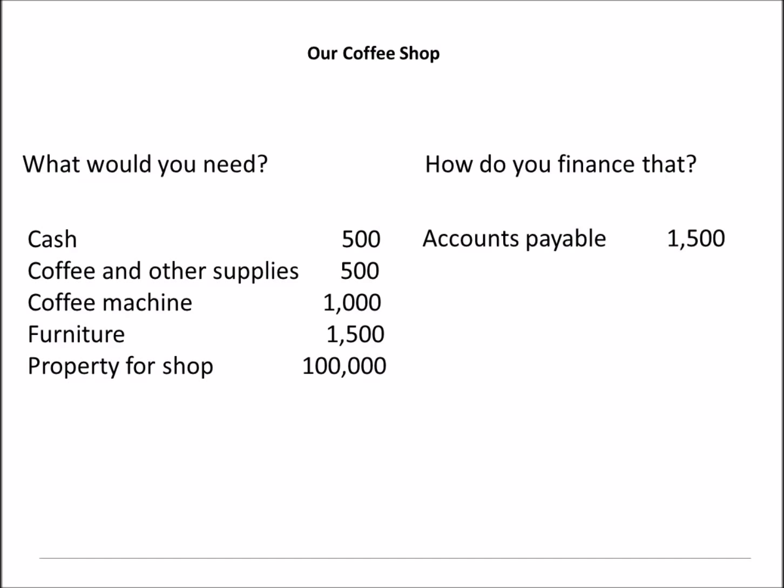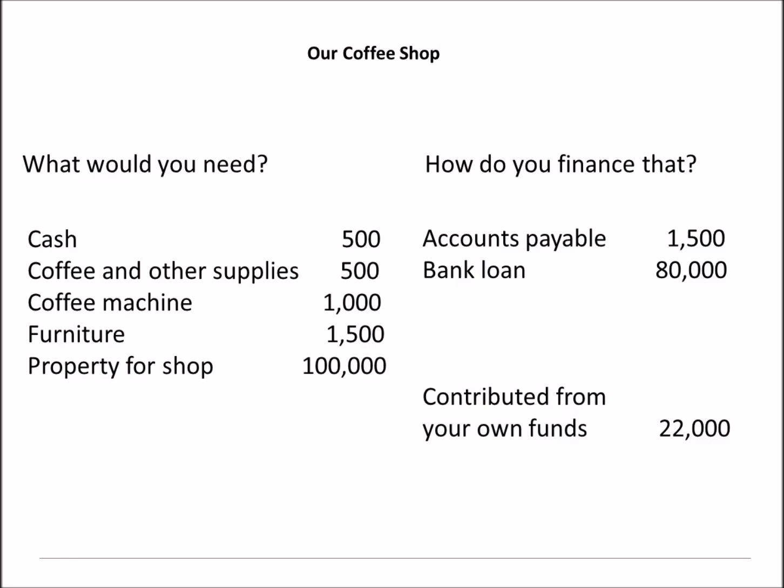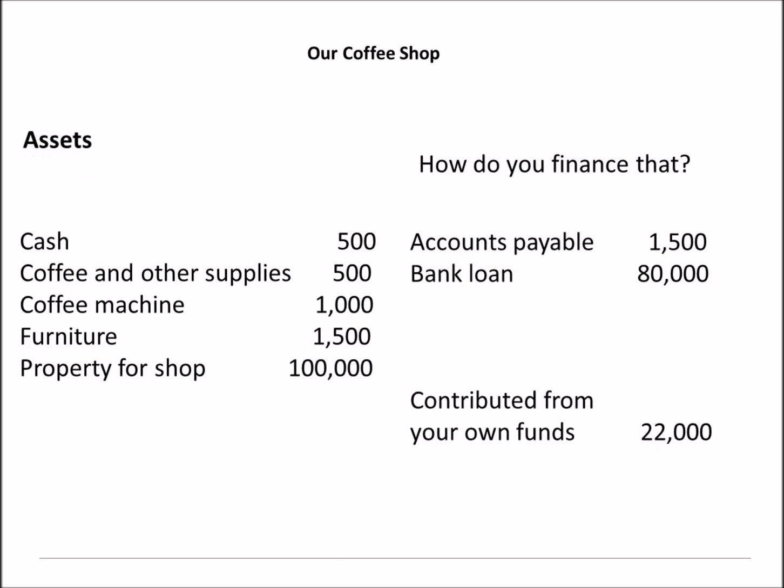We got a bank loan to help pay for the property for $80,000 — that's the amount we need to pay back to the bank. Loans for property are usually paid back over a long period of time. These are amounts we owe to an external party. In addition, we have the amounts we contributed ourselves: the $500 cash, $1,500 worth of furniture, and the property deposit of $20,000, making our contribution $22,000. What we have are what we call assets — these are items that will generate future economic benefits. We will use them to generate our income.